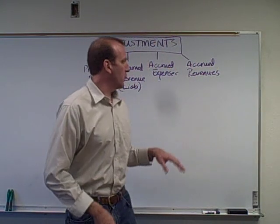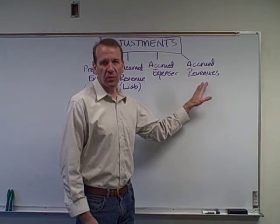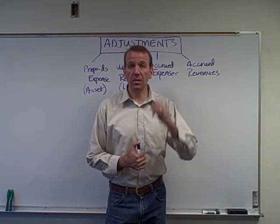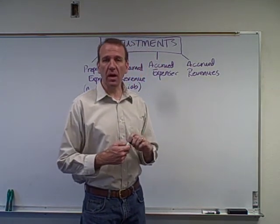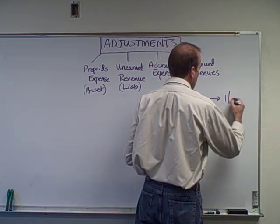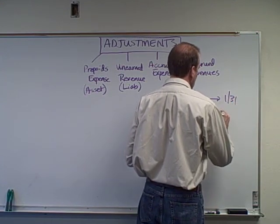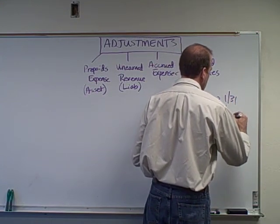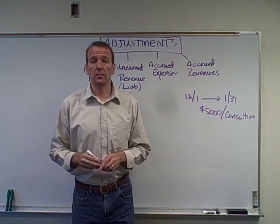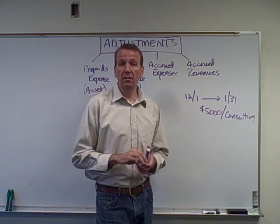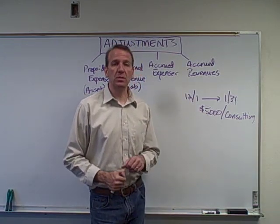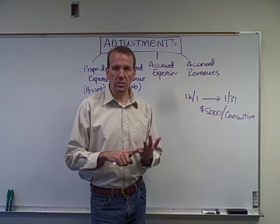Let's move on to the last adjustment we're going to talk about: accrued revenues. We'll use an example where we have a contract to do some consulting work for a business — a five thousand dollar contract starting December 1st and going to January 31st. We're going to be doing our work evenly over the next two months, and they're not going to pay us until probably February 1st or sometime later. That's very common — we do the services first, then bill our clients.